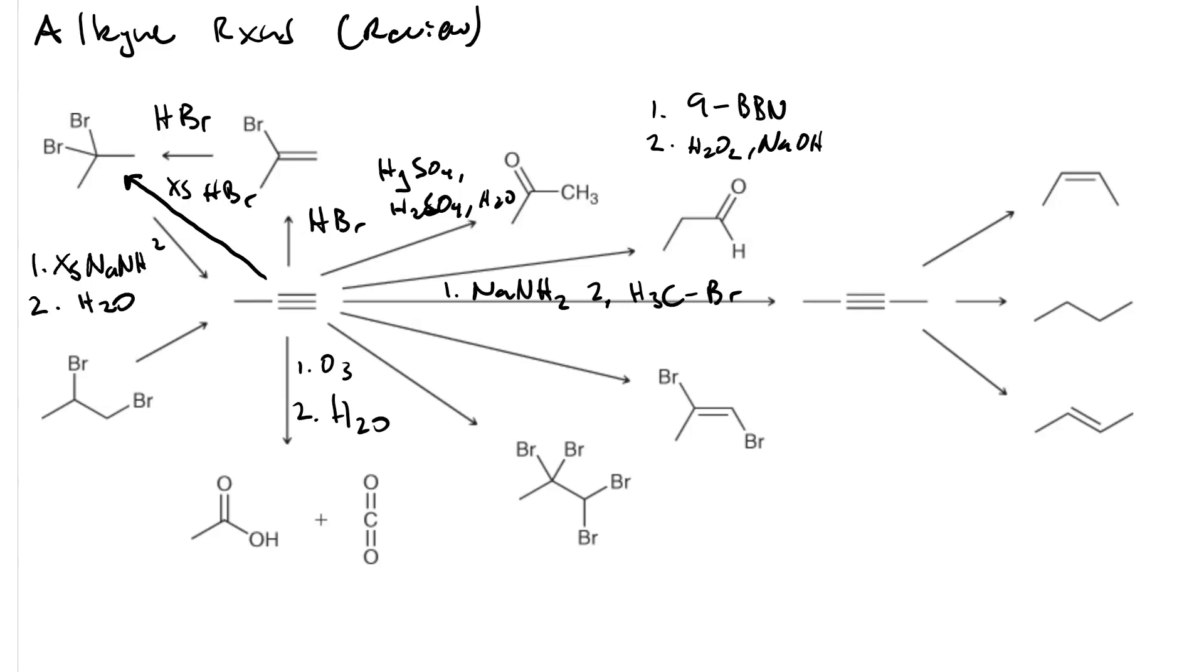Once we have this internal alkyne, to go to the cis alkene, we need to use a poison catalyst hydrogenation. So H2 and Lindlar's, or H2 and Ni2B.